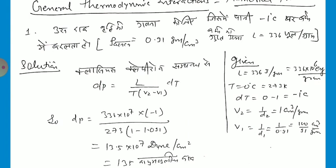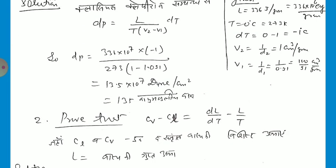So we can write dP equal to 336 times 10 to the power 7, multiplied by minus 1, divided by 273, and V2 minus V1 is 1 minus 100/91, which gives 1 minus 1.091. Using that, we calculate 13.5 times 10 to the power 7 dynes per centimeter square. Converting this to atmospheres, it is 135 atmospheres.